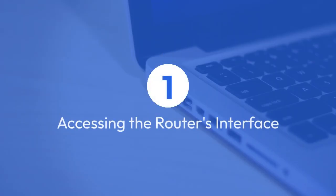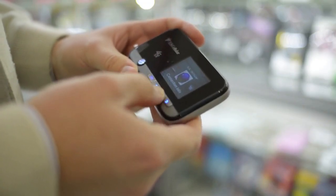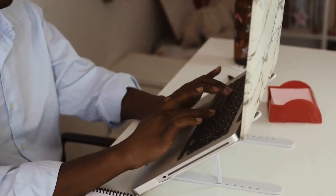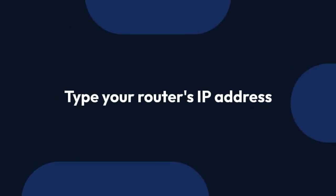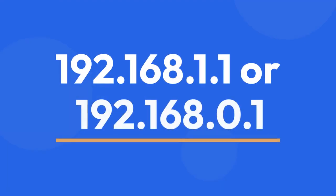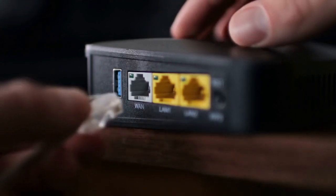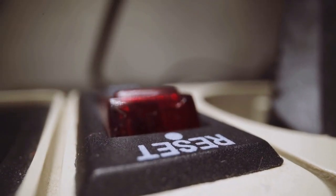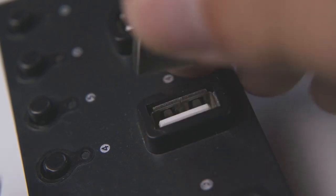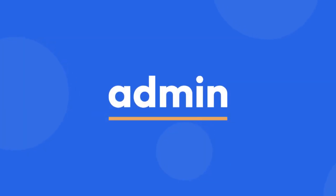Step 1: Accessing the router's interface. First, you need to access your router's configuration interface. Open a web browser on a device connected to your ZTE MC 888 router. In the address bar, type your router's IP address — this is usually 192.168.1.1 or 192.168.0.1, but you can check the sticker on the bottom of your router for the correct address. Once you've entered the address, press Enter. You'll then be prompted to log in. Use the username and password found on the same sticker — the default is often admin for both.